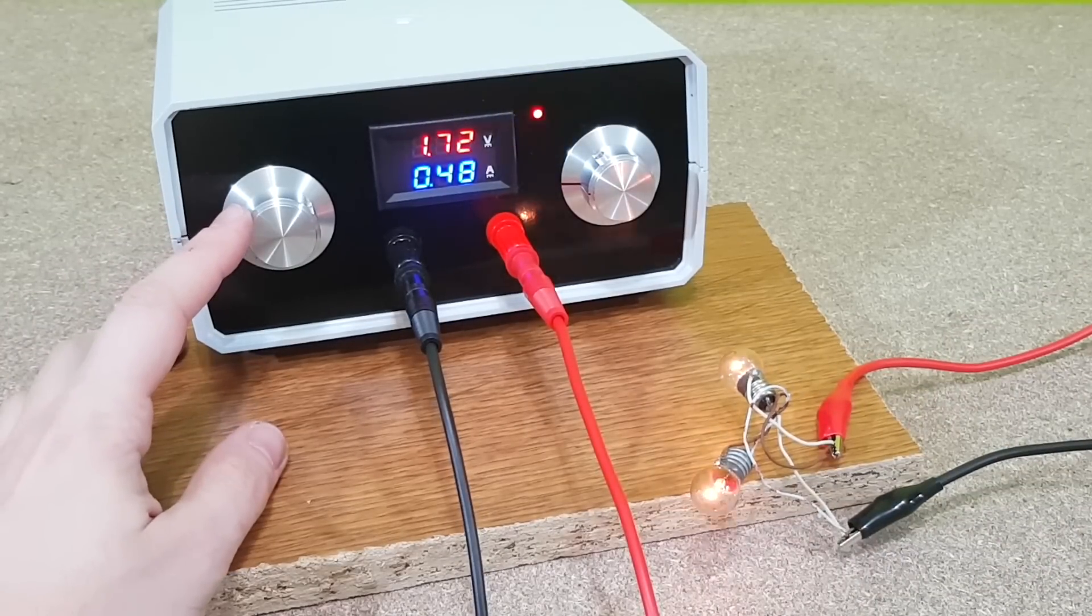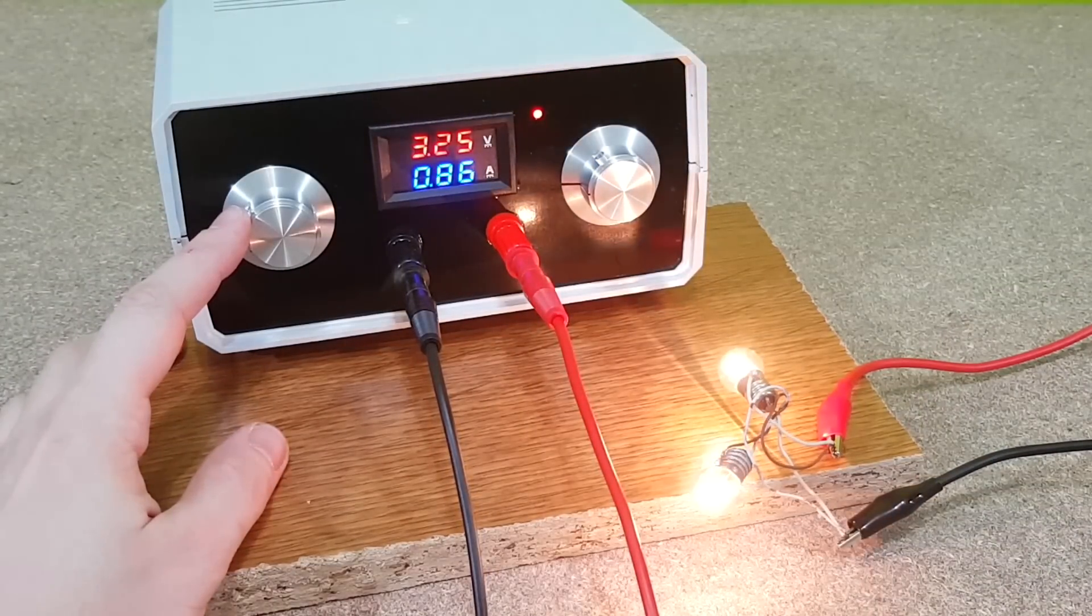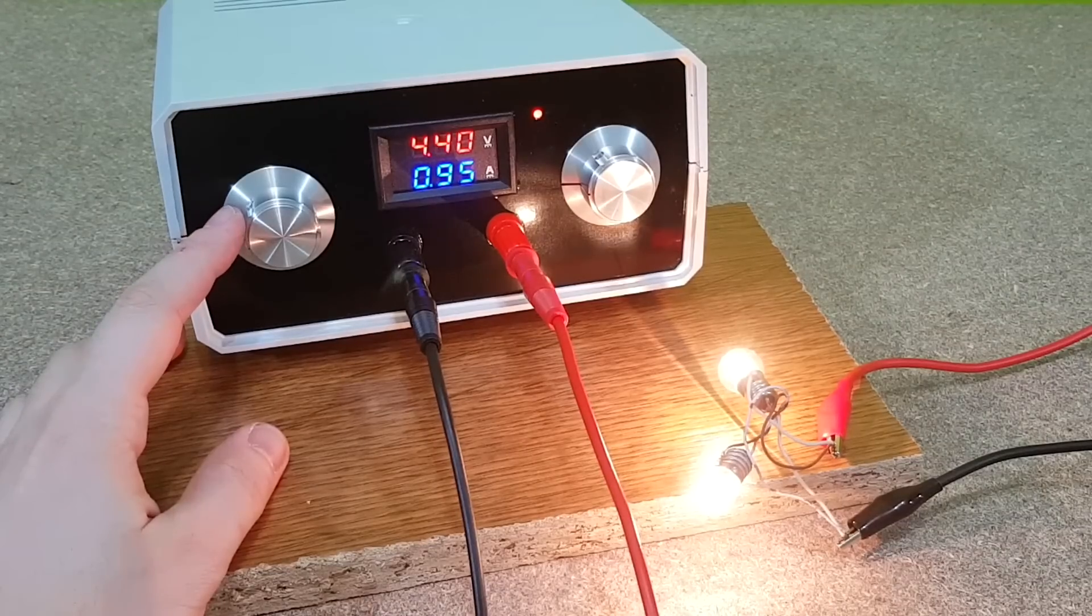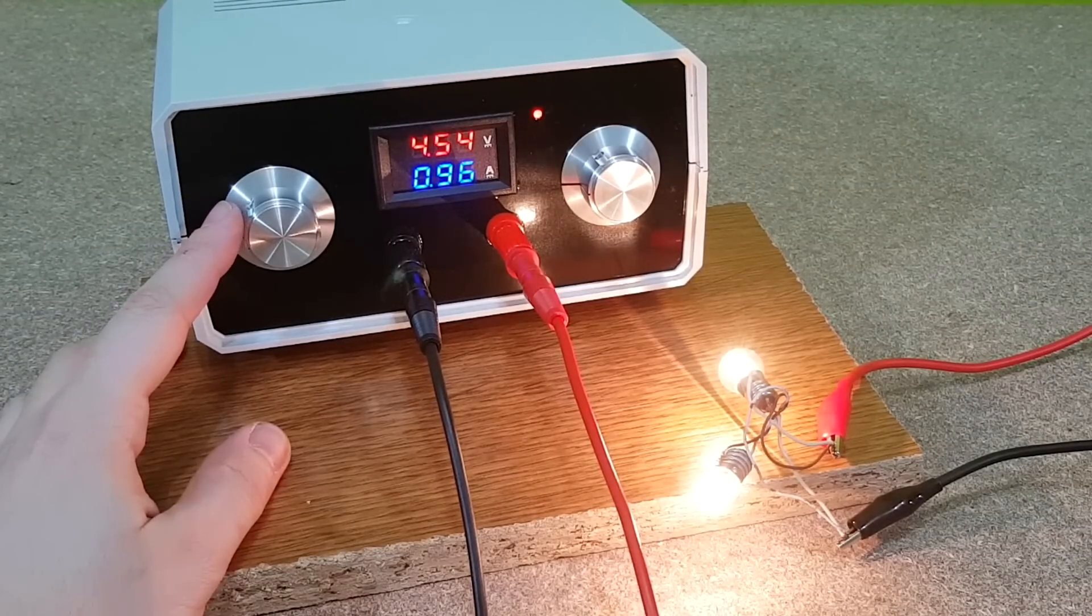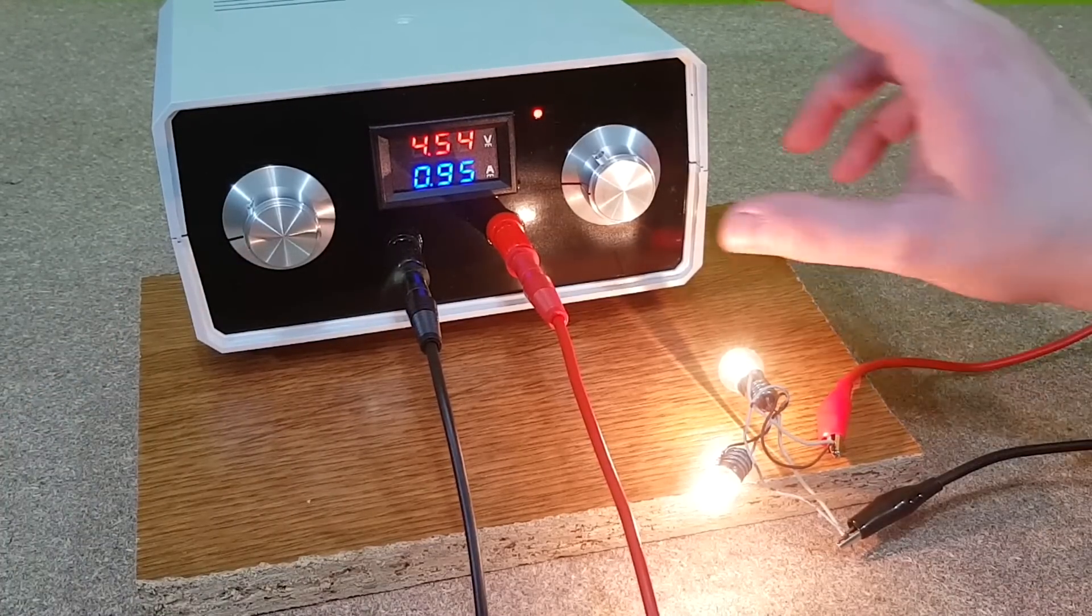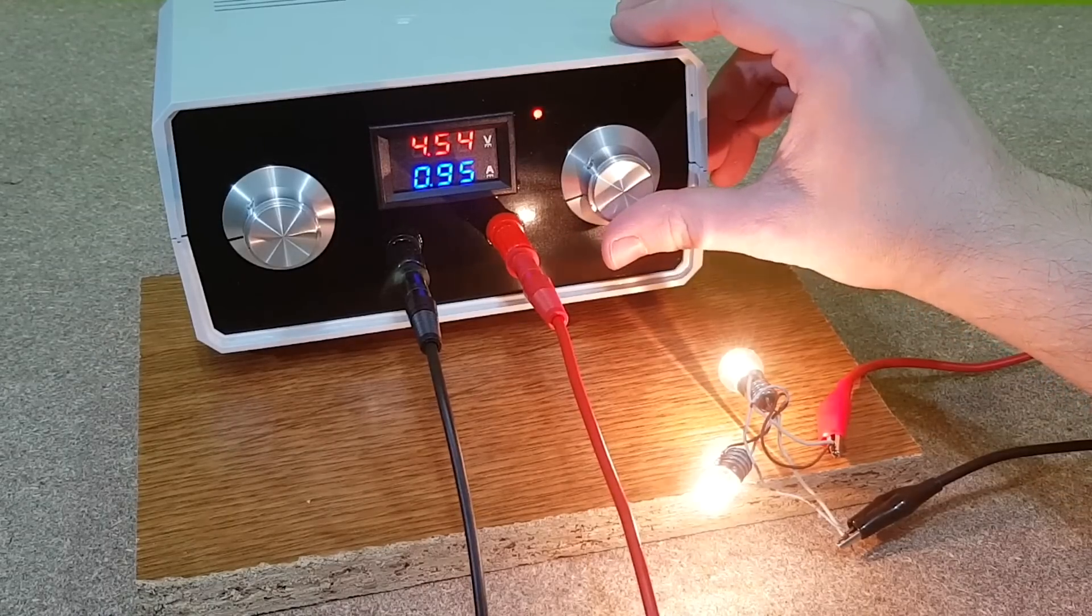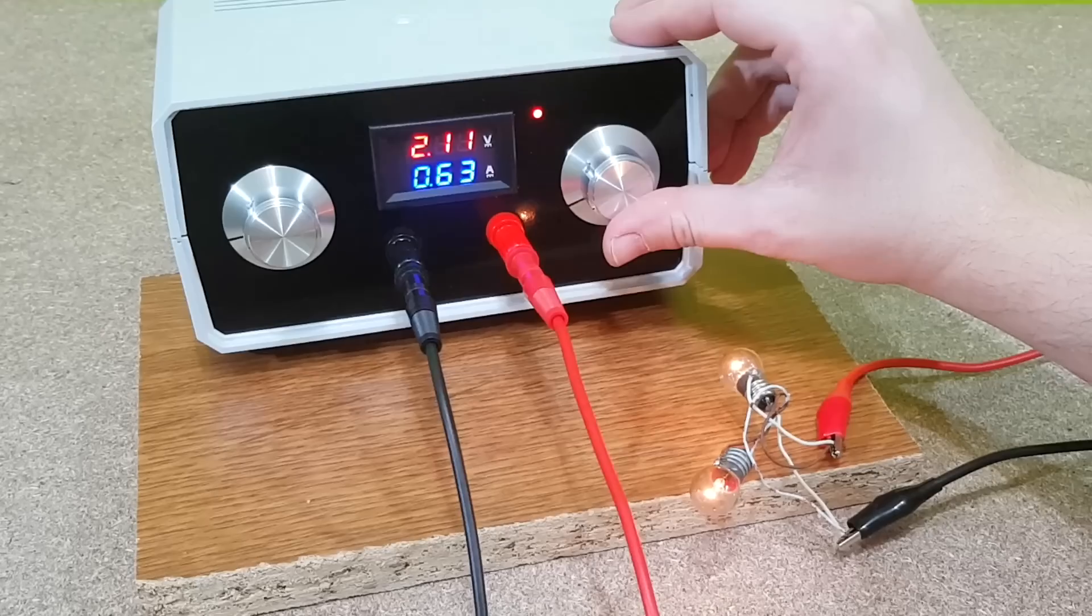Let's start with something small. Two light bulbs of 4.5 volts and 500 milliamps connected in parallel. I increase the voltage slowly. At 4.5 volts they are using almost 1 amp. Now let's limit the current at different values.